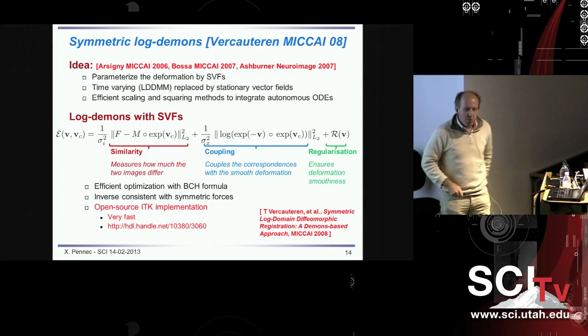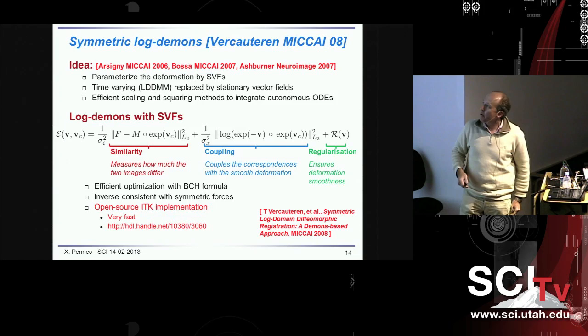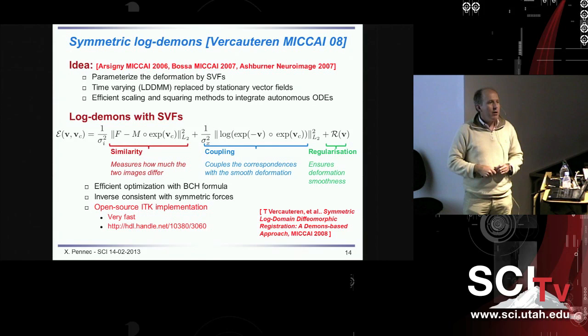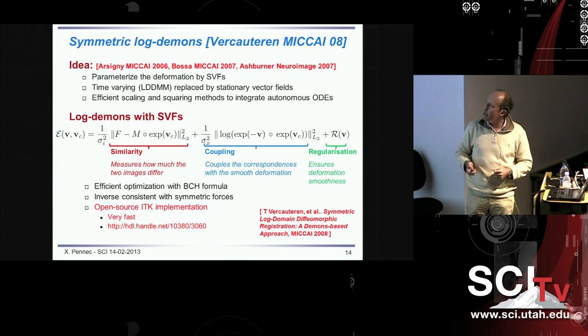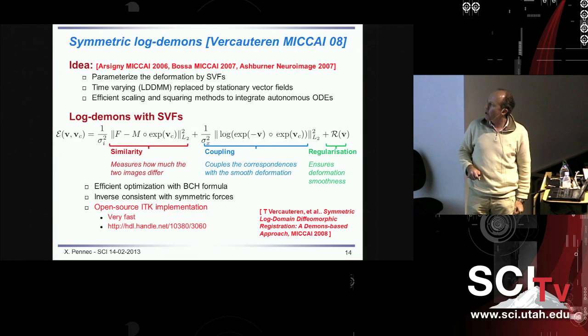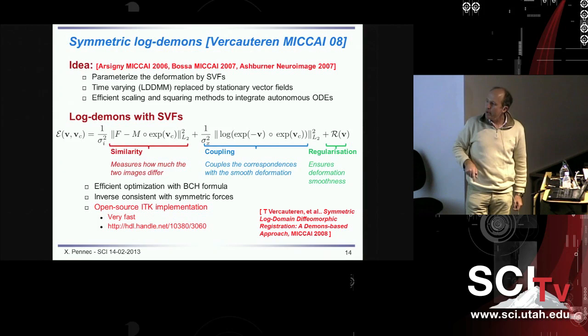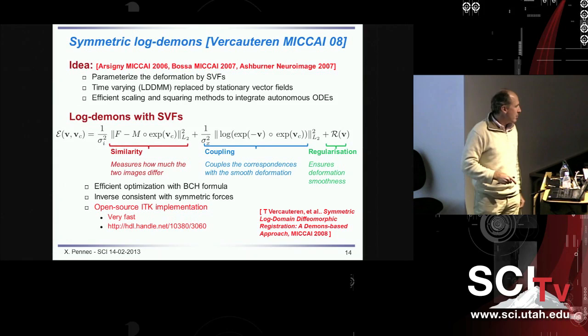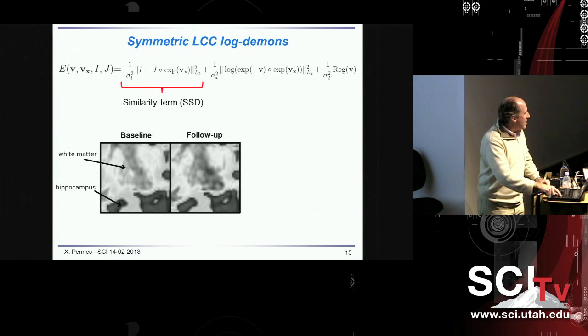Going back to the application: the idea following the introduction of the stationary velocity field framework was to parameterize the deformation with a one-parameter subgroup as the exponential of a stationary velocity field. This idea was exploited simultaneously by Matthias Bossa, John Ashburner, and a bit later we found a way to put it in the Demons, calling it the Log-Demons. We're using inverse-consistent criteria. It's quite fast and working quite well. This is the criterion we use to follow up deformations in time series of images.